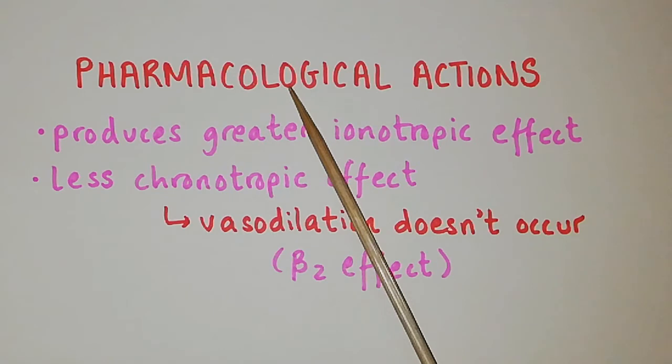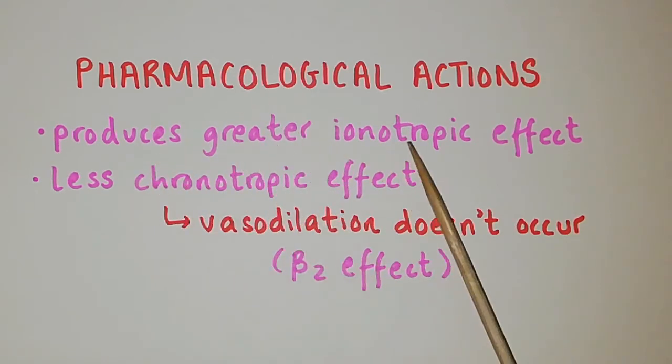Now coming to its pharmacological actions, it produces a greater ionotropic effect and a lesser chronotropic effect. This is because vasodilation does not occur, as vasodilation is a beta 2 effect.